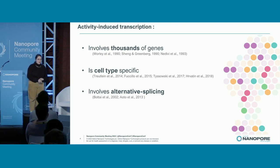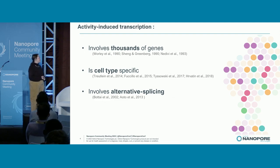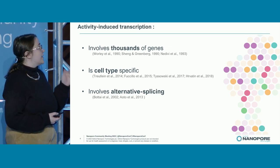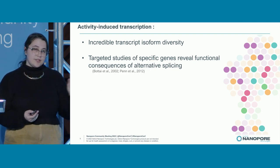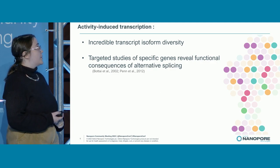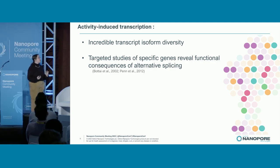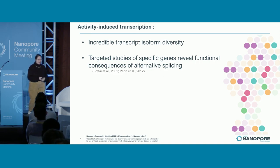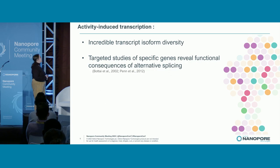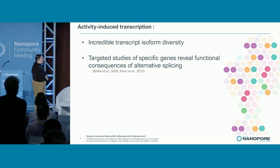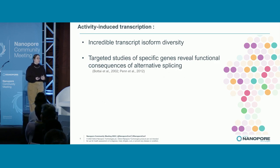We know from early screens using microarrays that activity-induced transcription involves thousands of genes. We know it's cell-type specific and it involves alternative splicing. All these layers of complexity compound to generate incredible transcript isoform diversity, and we're just starting to scratch the surface of that diversity with targeted studies of specific genes. But until now, we haven't had a nice unbiased way of probing this isoform-diverse response that reflects the huge gains in sequencing technology since microarrays.